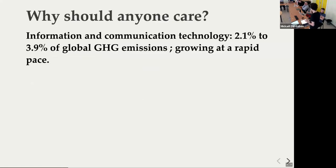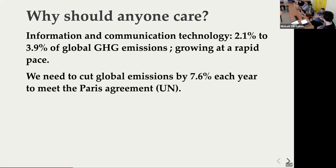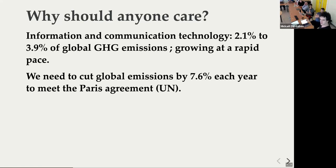Why should anyone care? Today, information and communication technology — ICT — is between two and four percent of global greenhouse gas emissions. It's not that much, but four percent is still huge, and it's growing at a rapid pace, both in percentage and in absolute terms. The United Nations said a few months ago that we need to cut emissions by 6.6 percent each year to meet climate targets — the goal is to limit warming to 1.5 degrees. This is not going in the right direction, but we want to change that.